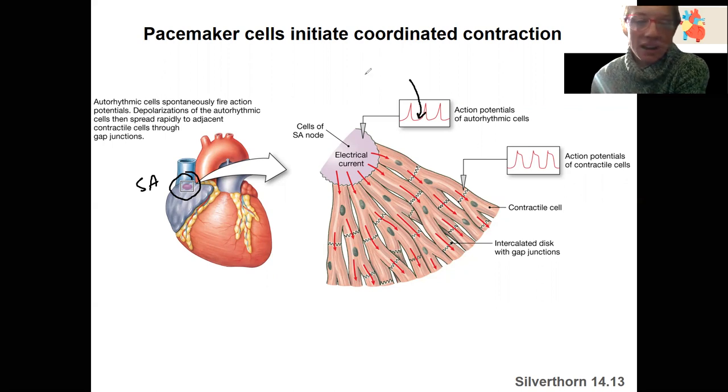So they're going to depolarize and then send that signal to adjacent contractile cells that are branched as well. So that branching is an efficient way to spread a signal quickly. And they're connected by intercalated disks that contain gap junctions.